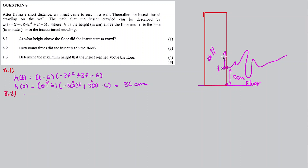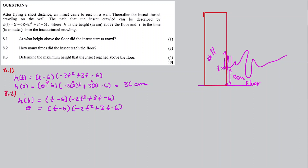8.2: How many times did the insect reach the floor? The insect might crawl up, fall off the wall, and start crawling up again, or it might follow a fancy path going up and back down. To find when the insect reaches the floor, the height must equal zero, so we equate the equation to zero.